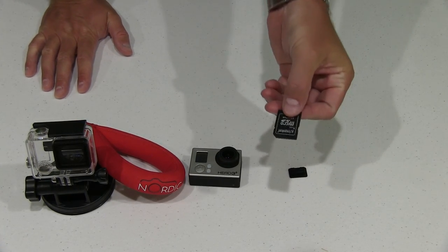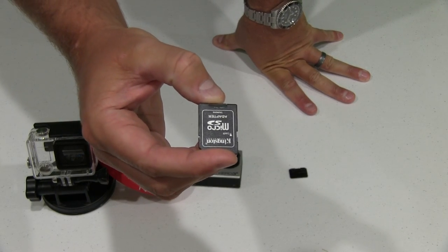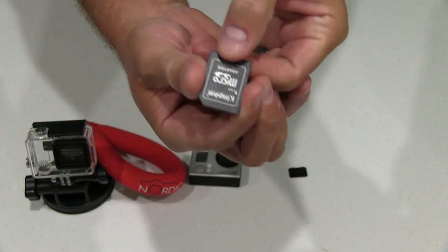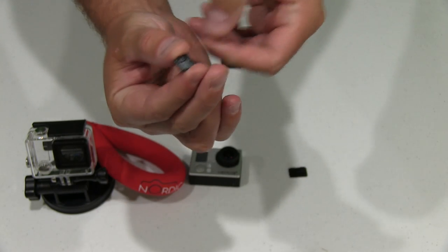And then beside it I've got the Kingston 32GB micro SD card. Now it's in its caddy that it comes with, but here's the little micro SD card right here.